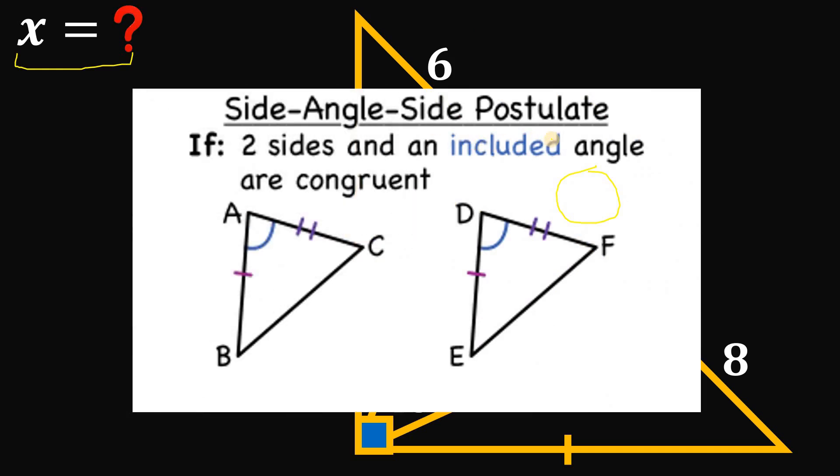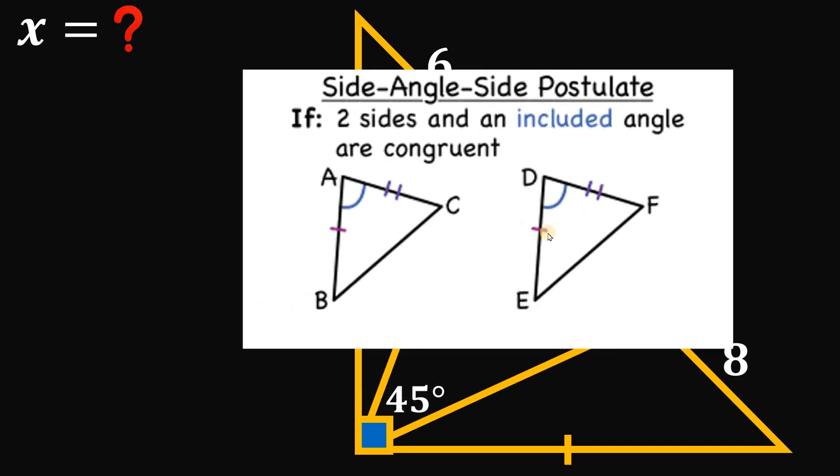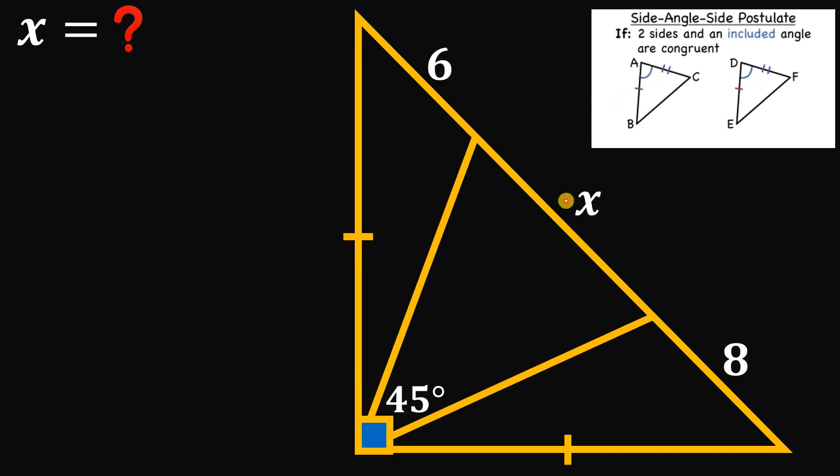The Side-Angle-Side postulate. It states: if two sides and an included angle are congruent, then the two triangles are congruent. We will use this concept to find the value of x.